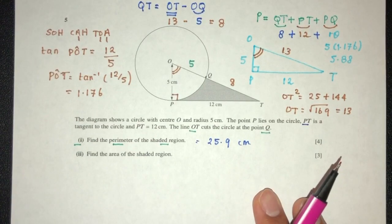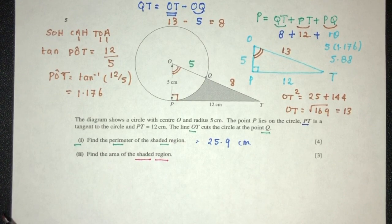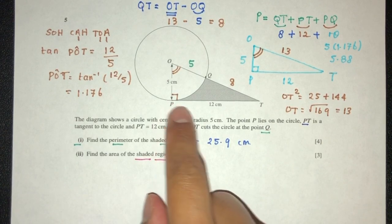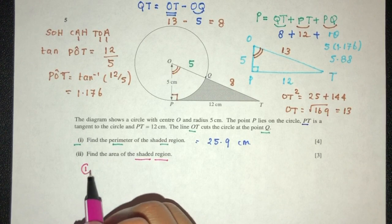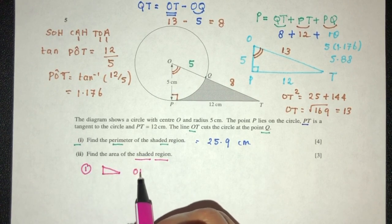Now for part 2, we have to find the area of the shaded region. Okay again, as always, to find the area, we have to break it down step by step. So the first thing we can do here is what? We can find the area of the whole thing. So number 1, we can find the area of triangle OPT.